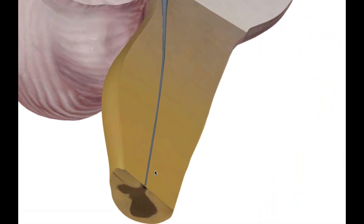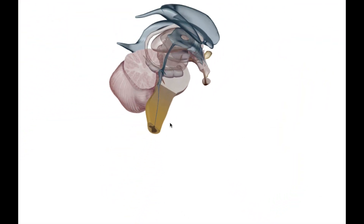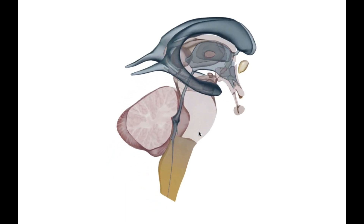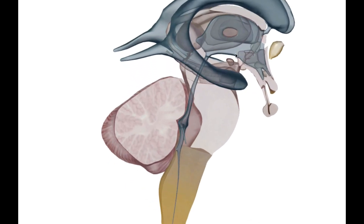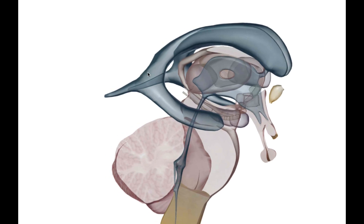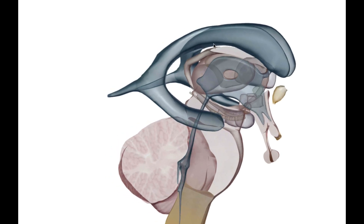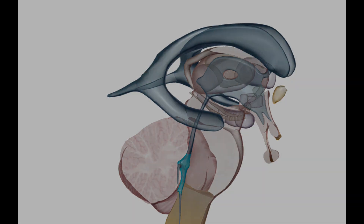That's it for this video — it's a short one. These are the ventricles of the brain: the internal chambers that house the cerebrospinal fluid. You have the lateral ventricles — two of them — the third ventricle, and the fourth ventricle. Thanks for listening and good luck in your studies.